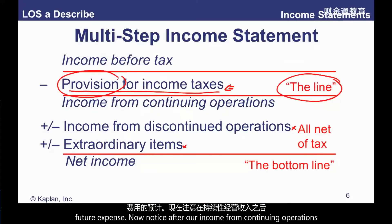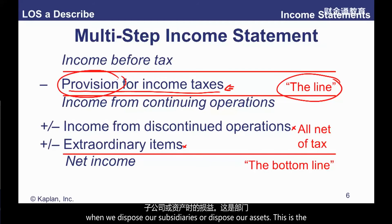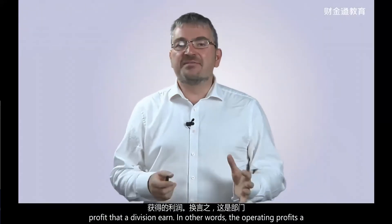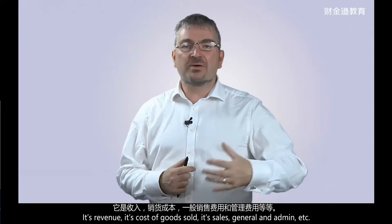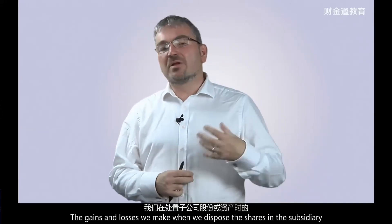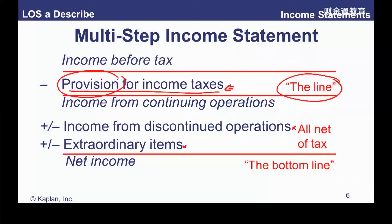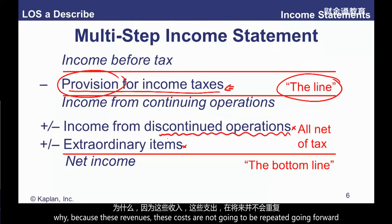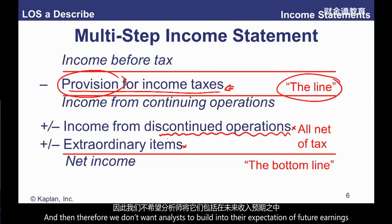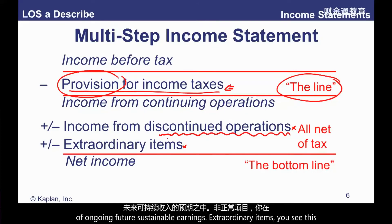After income from continuing operations, we get income from discontinued operations. This is not the profit or loss when we dispose of subsidiaries or assets — it's the operating profits a division earned up until the point it was discontinued: revenues, costs of goods sold, SG&A, etc. We show it separately because these revenues and costs won't be repeated going forward, so we don't want analysts to build them into expectations of future sustainable earnings.